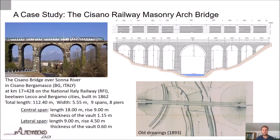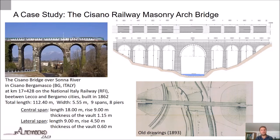In the current work, the Cisano Bridge was studied to assess the bearing capacity under traffic load. It is located in the north of Italy, in the municipality of Cisano Bergamasco, at km 17+428 on the national railway system between Ponte San Pietro and Calusco d'Adda sections. It was built in 1862, at the same time as the construction of the railway. It spans over the Adda River and the Sona Provincial Road, with a total length of 112.4 metres and a width of 5.55 metres. The railway served by the bridge consists of a single electrified track, allowed to reach a maximum velocity of 60 km per hour.